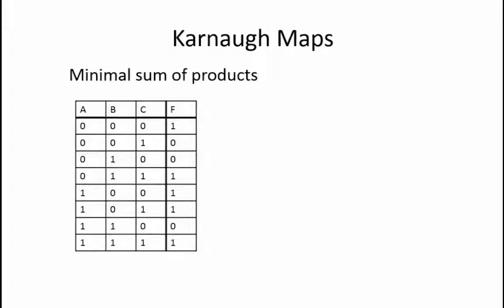You start with the original truth table specification of a function. You then express each set of inputs that makes the function equal to 1 as a basic product term. ORing all of these product terms together produces the sum of products representation for the function.